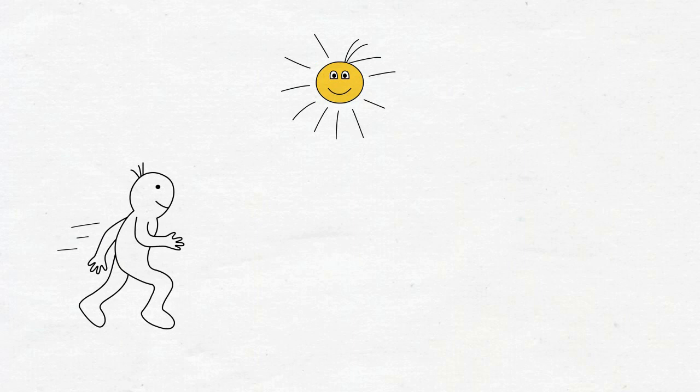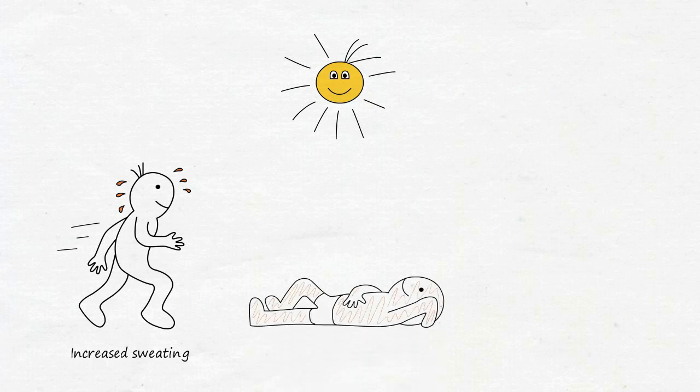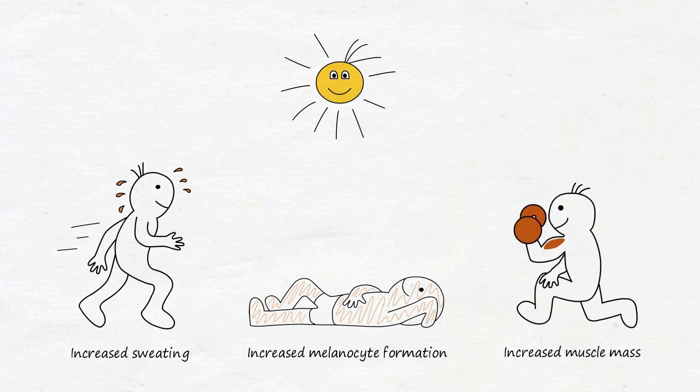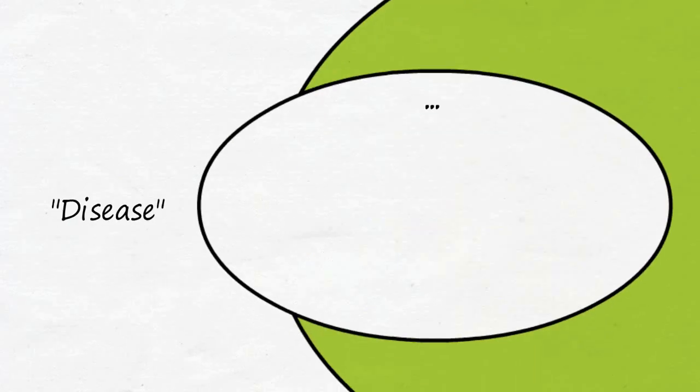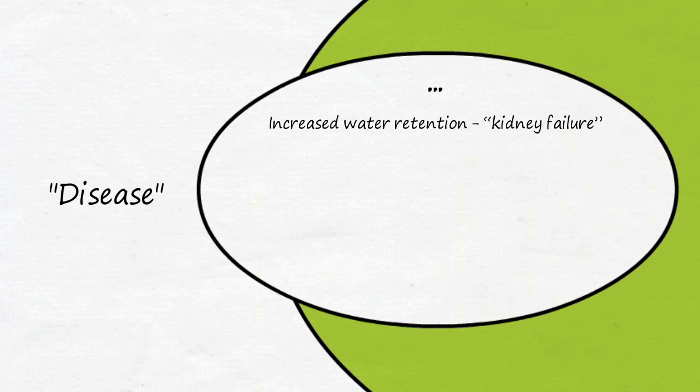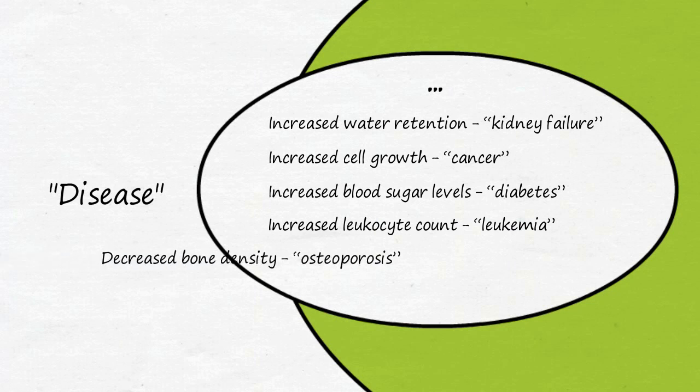All bodily functions adapt to external circumstances on a daily basis. For example, we sweat and our pulse rate climbs when we jog, or we tan upon prolonged exposure to the sun, or our muscles grow if we regularly push them to their limit. However, other changes at the cellular or functional level are referred to as disease, as so far, nobody has been able to make any sense of them.